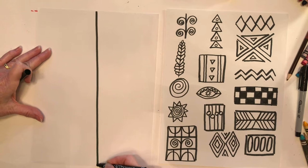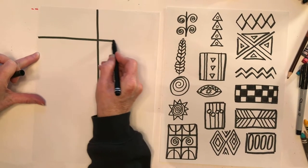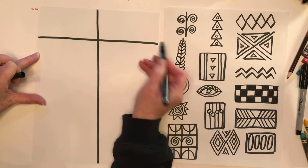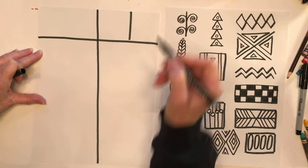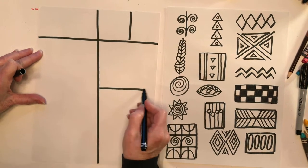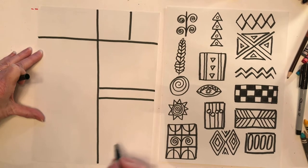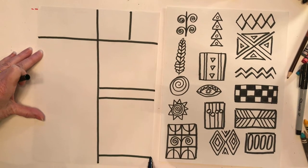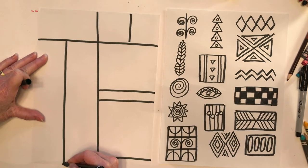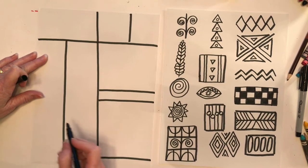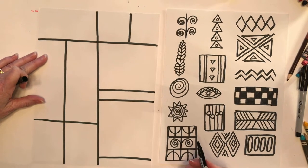And remember, yours does not have to look just like mine. You are going to create your own work of art. I'm just doing this as a guide for you. So we're going to make some sections on our paper. And I'm using a marker, but you can use any supplies that you have available. And you probably even want to start off with a pencil first. You could even use a ruler to make your lines really straight.